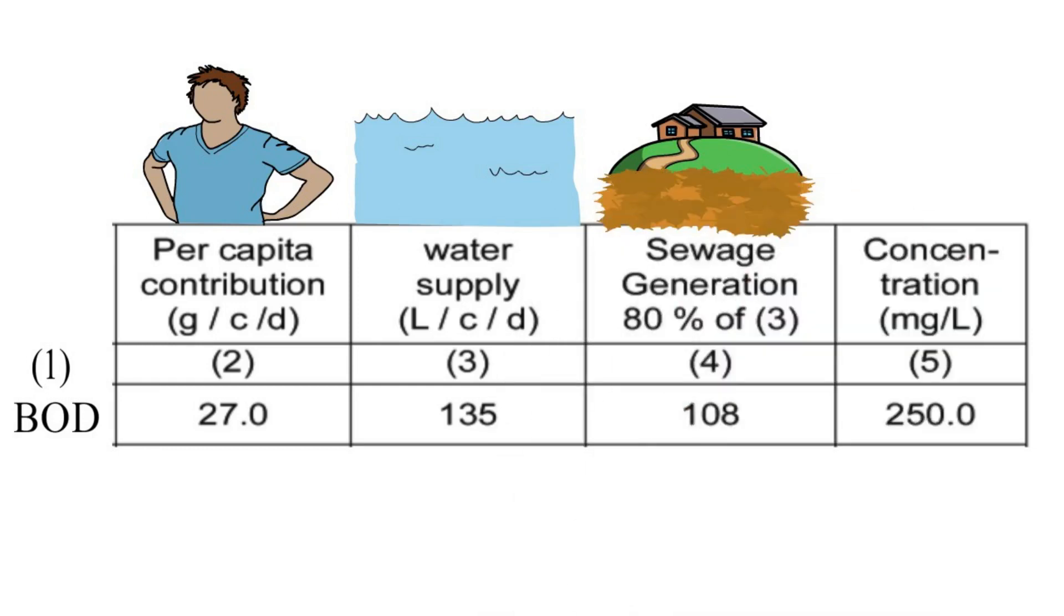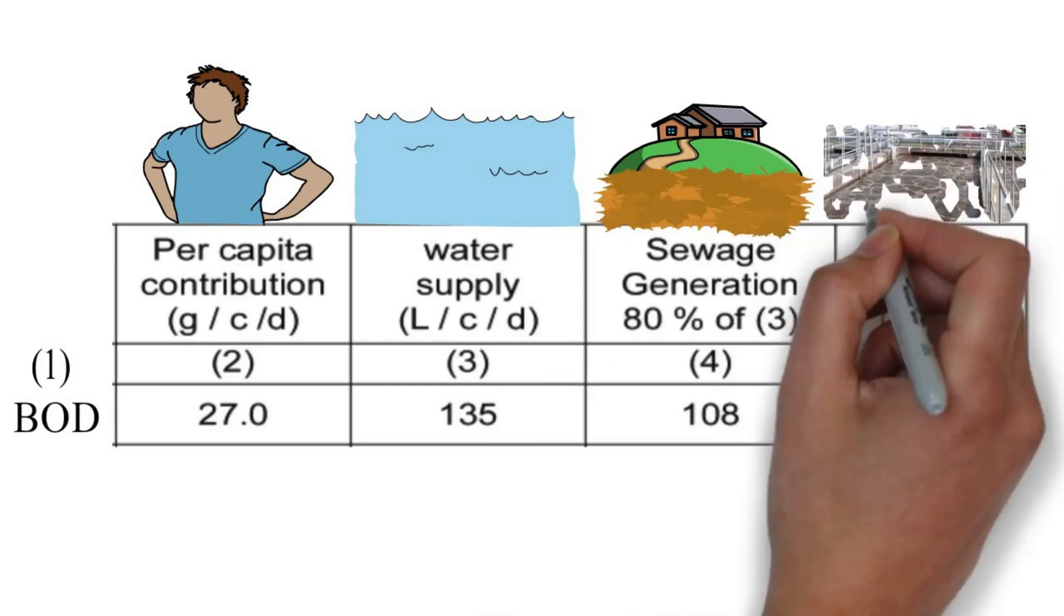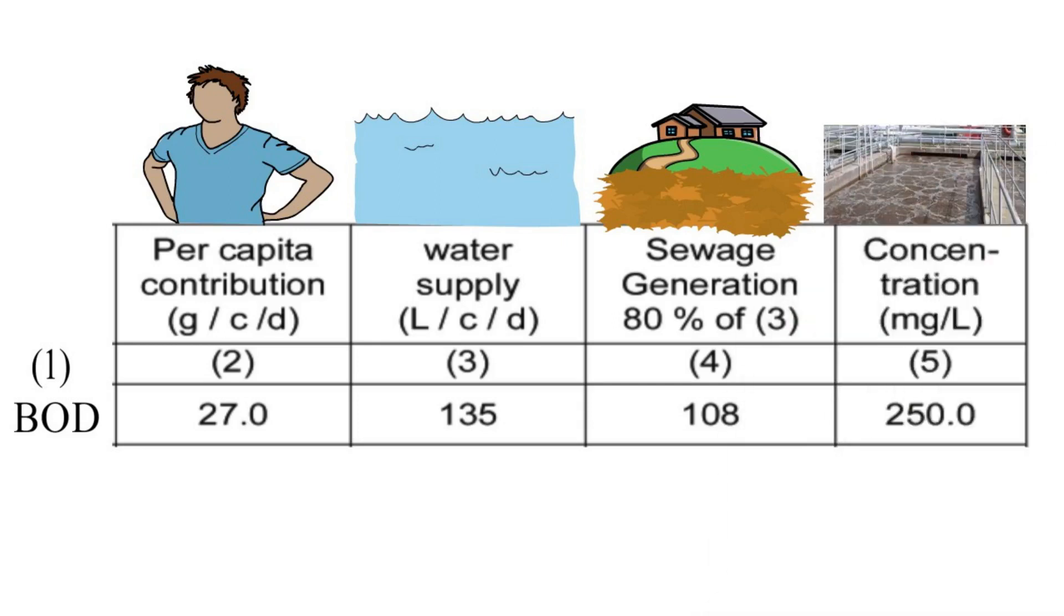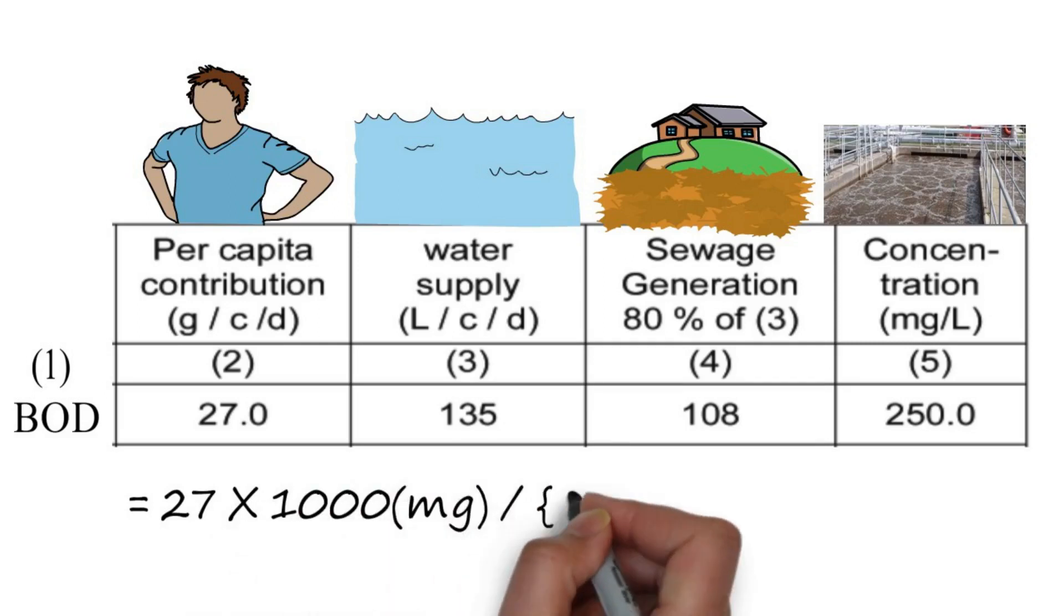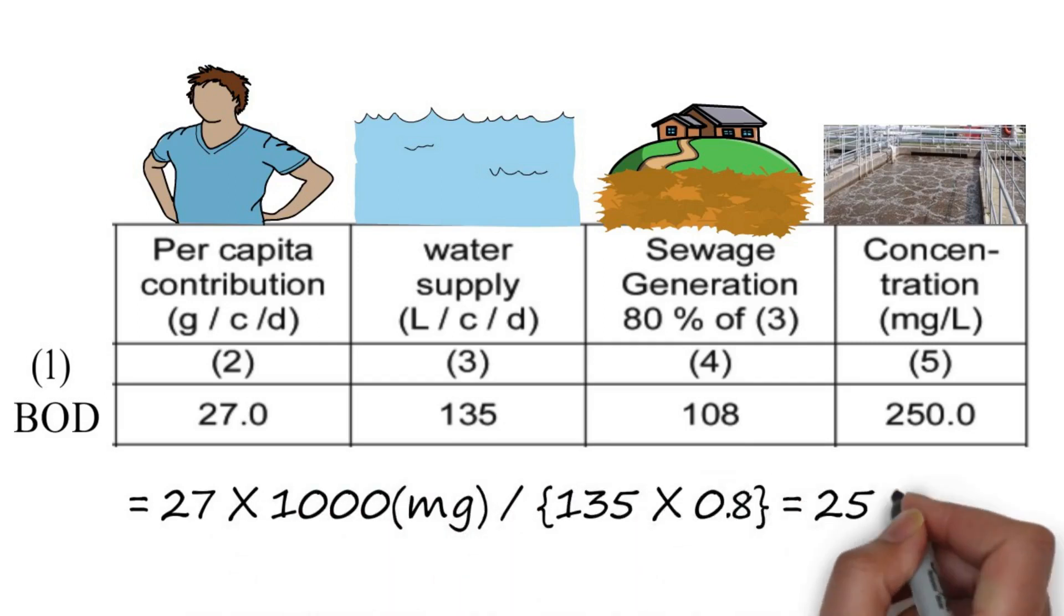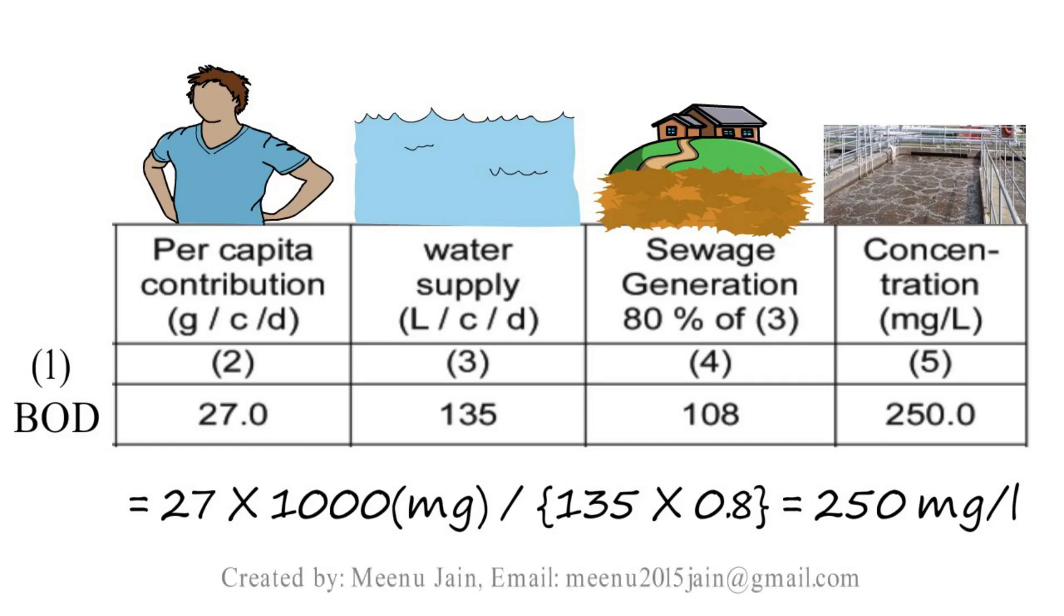Eventually, 27g or 27,000 mg divided by generated sewage, that is 135 multiplied by 0.80, equals 250 ppm or 250 mg per litre.